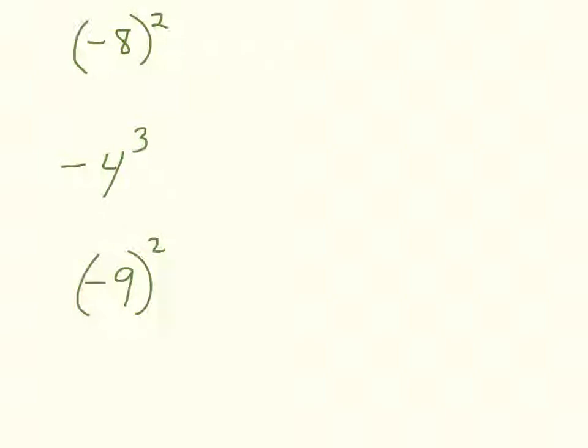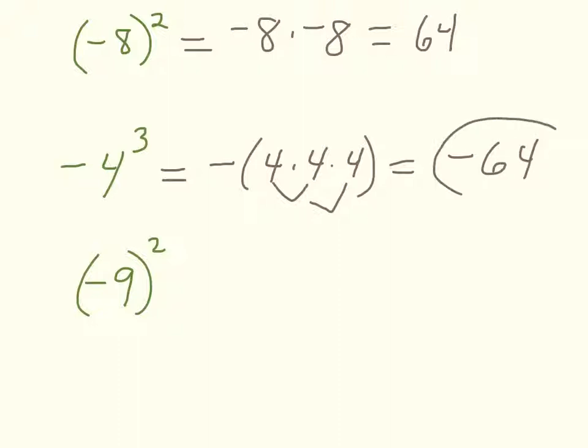The top expression is telling you to take that quantity of negative 8 and multiply it by itself twice. Negative 8 times negative 8 will be positive 64. The second expression is saying take the opposite of 4 times 4 times 4, which is 16 times 4 equals 64, and the opposite of 64 is negative 64. The last expression tells us to take that whole quantity of negative 9 and multiply it by itself. Negative times a negative is positive, so 9 times 9 is 81.